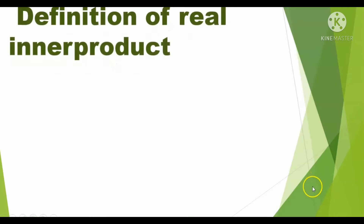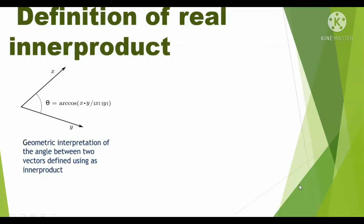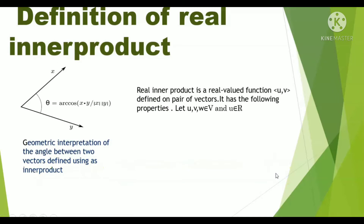Here I draw the angle between two vectors x and y, and the formula cos(x, y) divided by mod of x times mod of y. This gives the geometric interpretation of the angle between two vectors defined using the inner product.